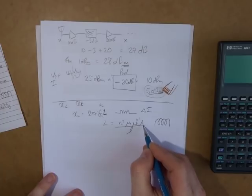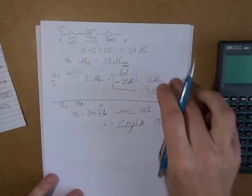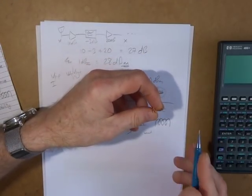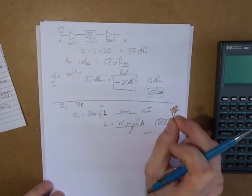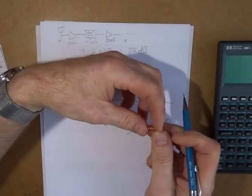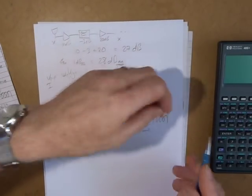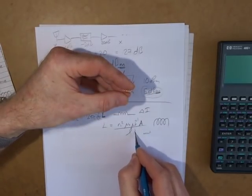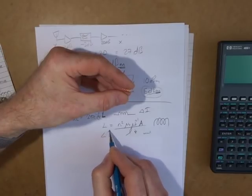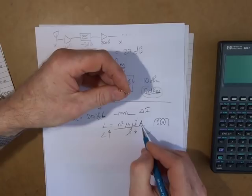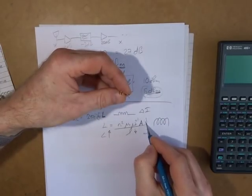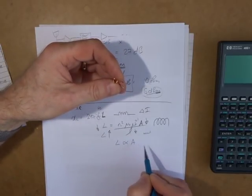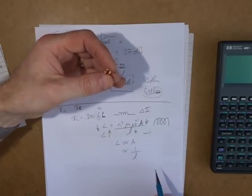Our A is our area — looking down at the cross-section in metres squared. And L is the overall length of the inductor. You can see that if we were to squeeze this up and make L smaller, our inductance would increase. Conversely, if we reduce our area and make it smaller, our inductance would go down because it's directly proportional. So inductance is proportional to area and proportional to 1 over L.